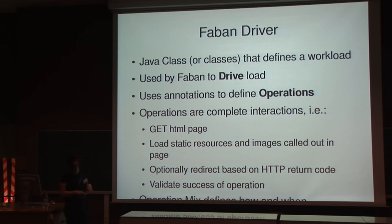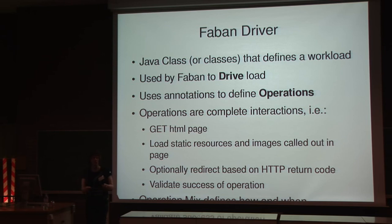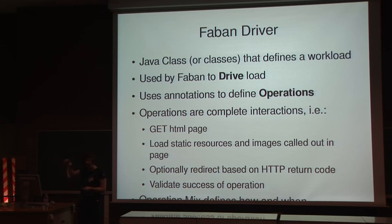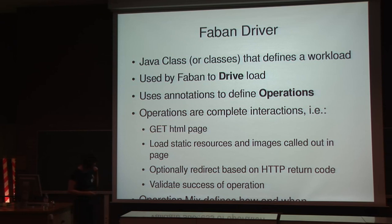An operation mix is basically the transition from one operation to another. A user would perform an operation, then do something else on your system. So an operation mix defines how that happens. It could be a simple sequence — do this, then do that — which is constantly repeated by every single user. Or it could be something more complicated, and that's where we start talking about using finite Markov chains to simulate randomness within the system. You can do all of that and get it absolutely for nothing, though it's a bit more complicated to program.